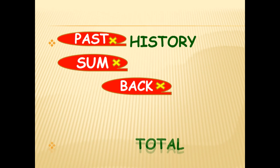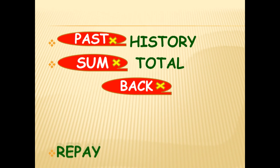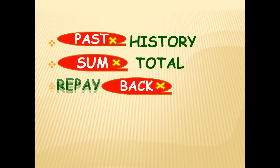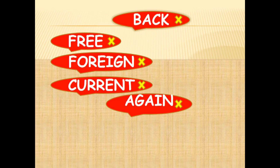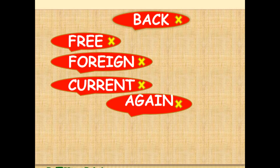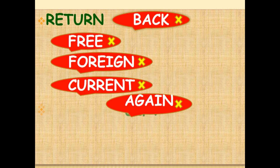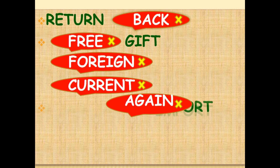'Past experience,' 'past history,' 'free gift,' 'sum total,' 'repay back,' 'return back' — all the words encircled in red are to be avoided. 'Free gift' — a gift is by definition something given free, so there is no need to use the word 'free' again in the statement.